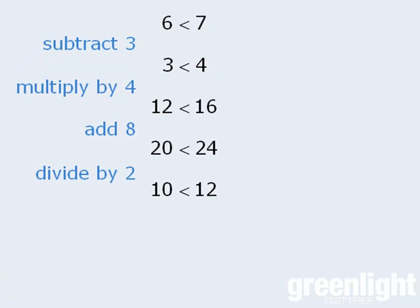However, notice what happens when we divide both sides of the inequality by negative 2. When we do this, we get negative 5 is less than negative 6, which is false. Negative 5 is not less than negative 6. So the inequality does not remain intact when we divide both sides by negative 2. In fact, it appears that we need to reverse the direction of the inequality.